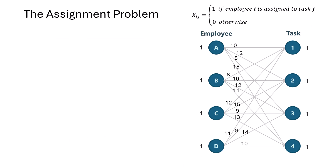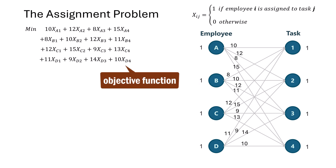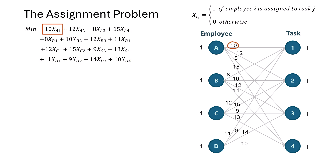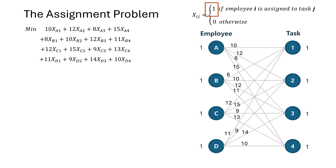Since we are minimizing costs, our objective function looks like this. We are minimizing the sum of all the assignment costs. Assigning A to 1 costs 10 units, A to 2 costs 12 units, and so on. Since the x_ij are binary — 0 or 1 — only the costs associated with assigned tasks, where x_ij equals 1, will be included in the total cost.